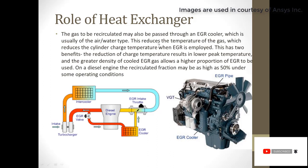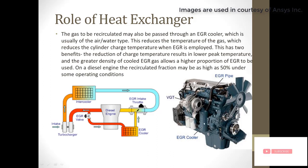On a diesel engine the recirculated fraction may be as high as 50 percent under some operating conditions. Part of the exhaust gas is recirculated and sent back to the inlet manifold, and before entering the inlet manifold there is the EGR cooler where the exhaust gas temperature is reduced. In the actual engine prototype, you can see an exhaust gas pipe with a cooler in between to reduce the temperature.